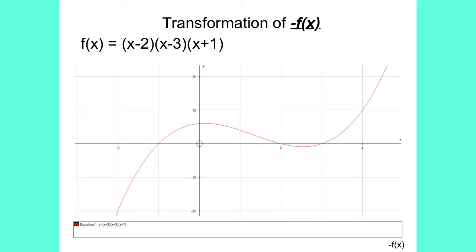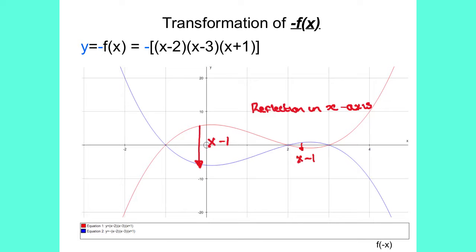The next transformation is minus f of x. So if we again draw the graph of f of x equals x minus 2, x minus 3, x plus 1, we have x-intercepts at minus 1, 2, and 3. If we now draw the graph y equals minus f of x, which is equal to minus x minus 2 times x minus 3 times x plus 1, the graph is reflected in the x-axis. In other words, the y-coordinates are multiplied by minus 1.